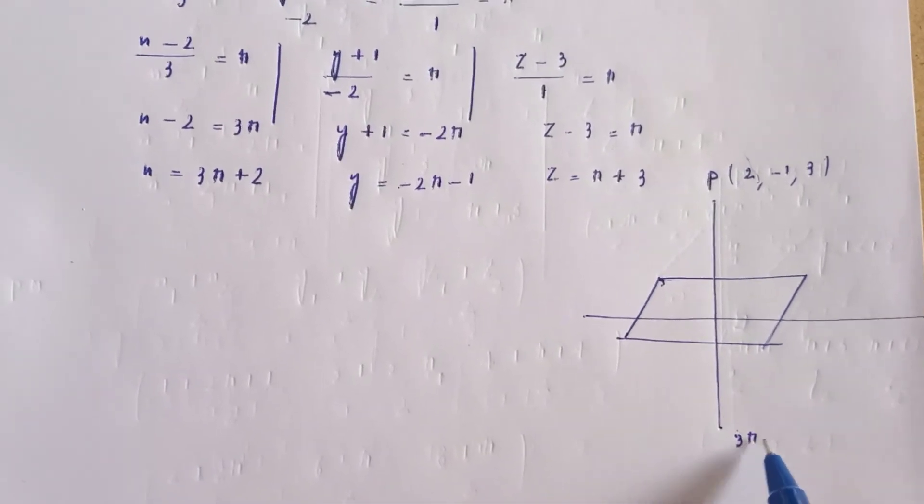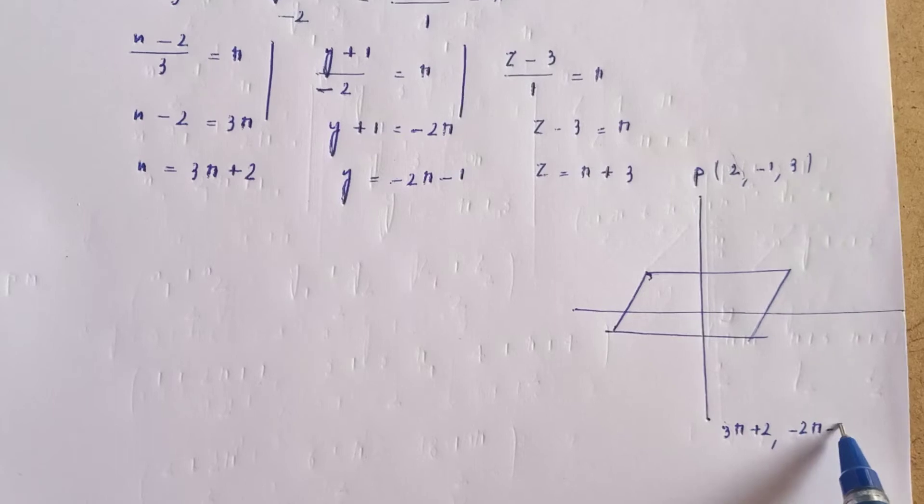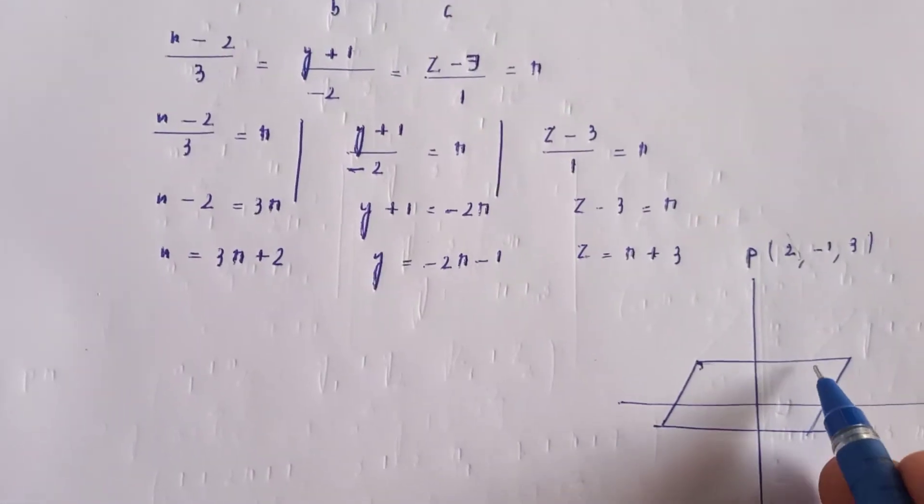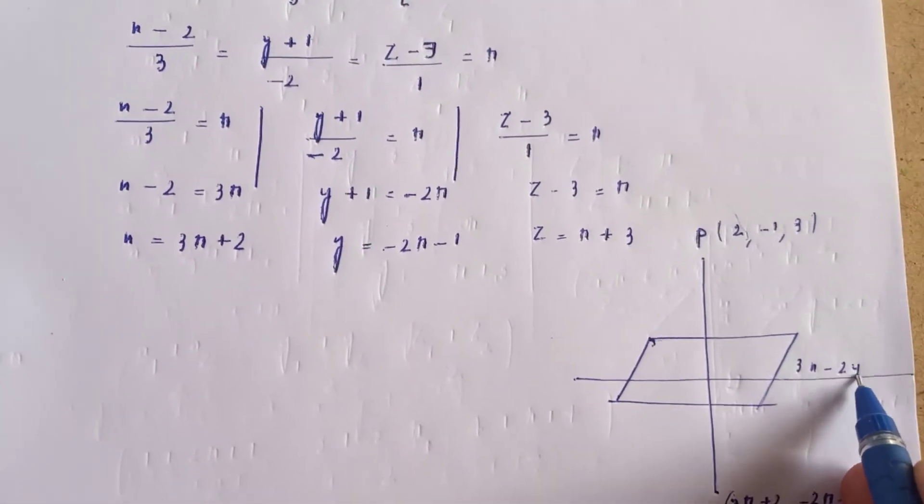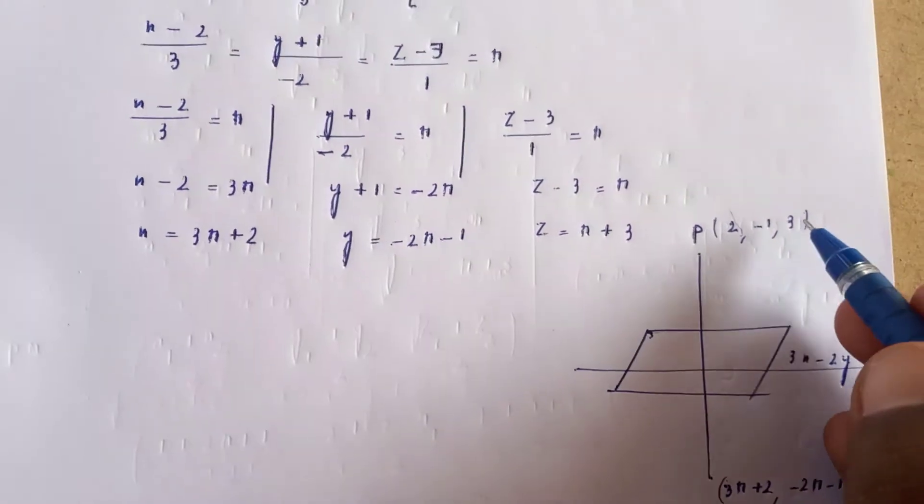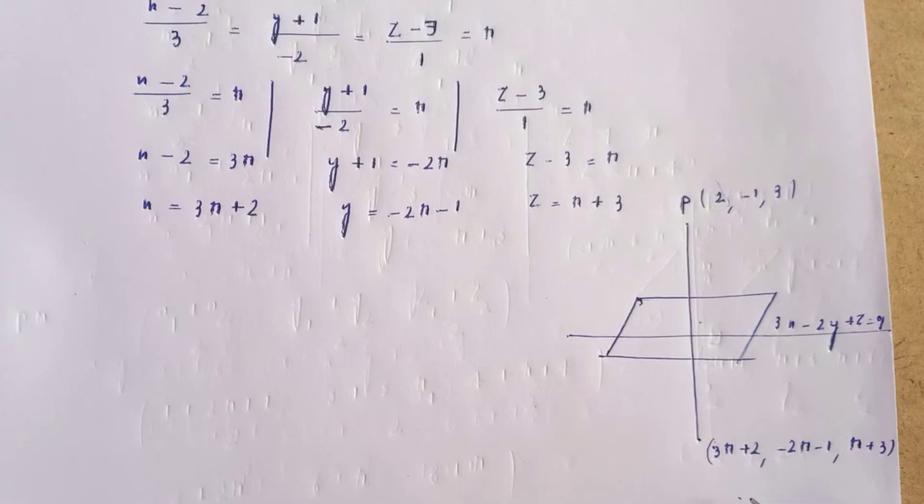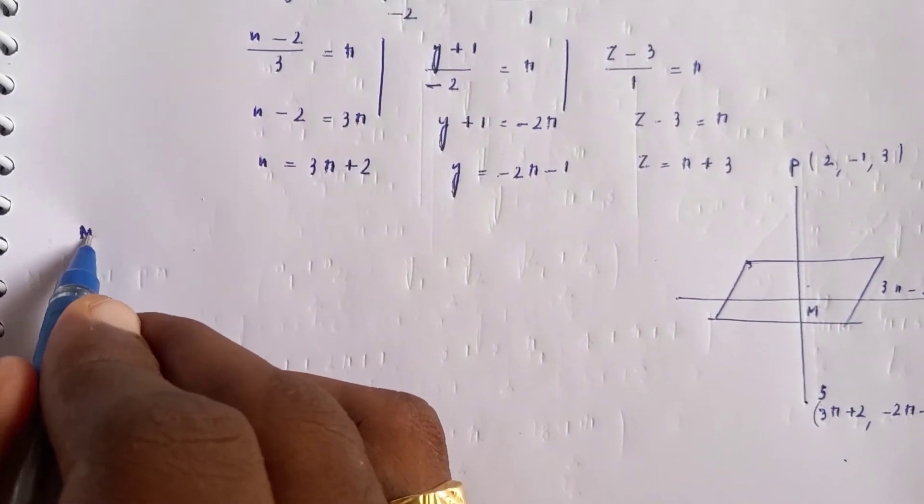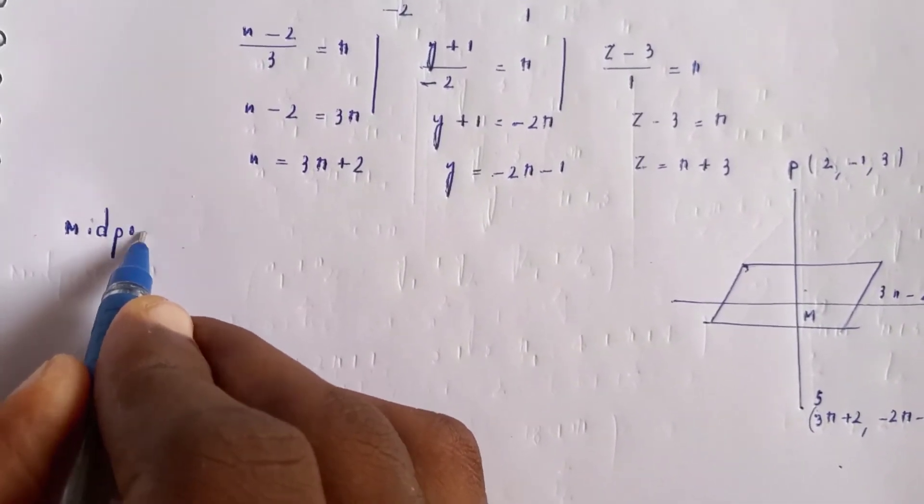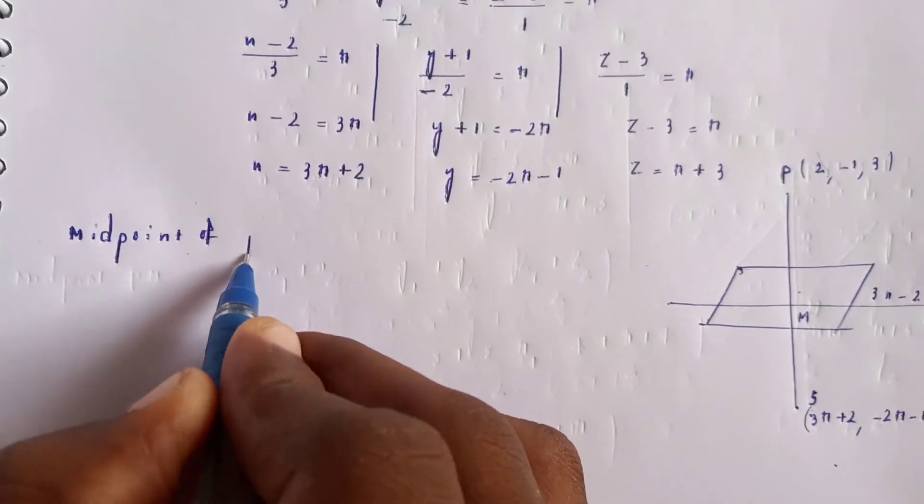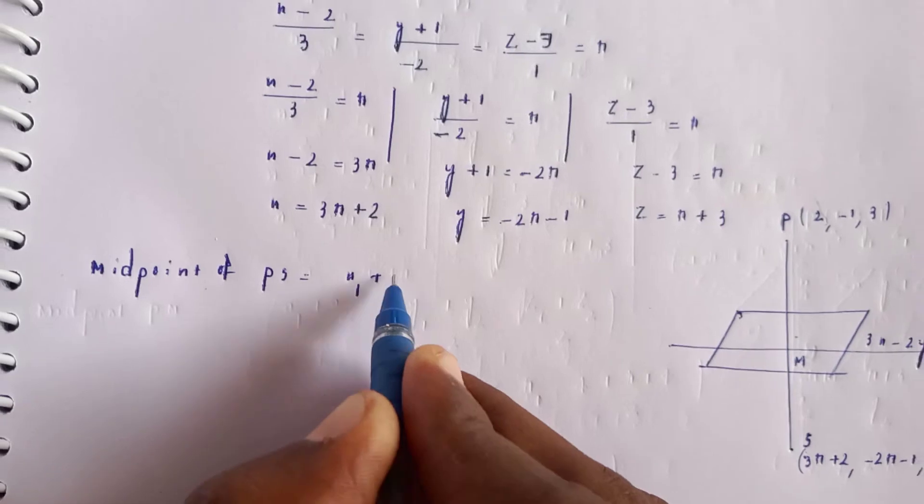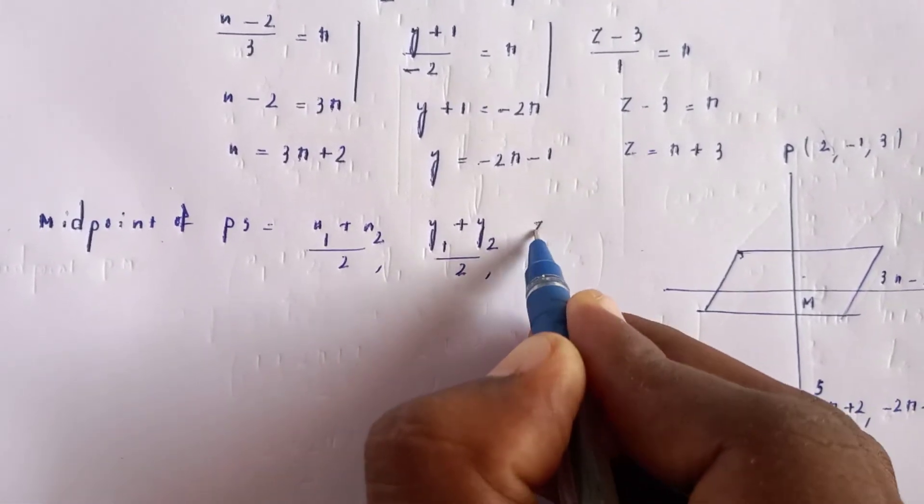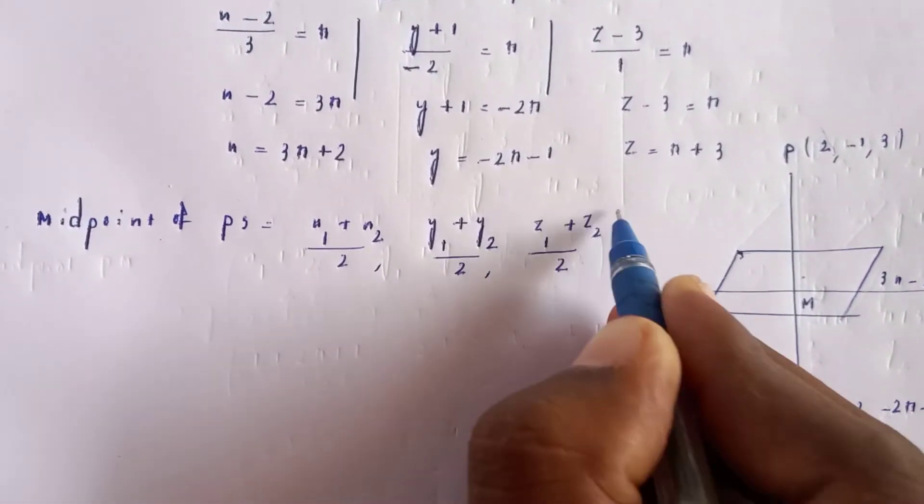The image point will be on the line we just found. To find the image, we use the fact that the midpoint of the original point and its image lies on the plane. The midpoint formula is: ((x1 + x2)/2, (y1 + y2)/2, (z1 + z2)/2).